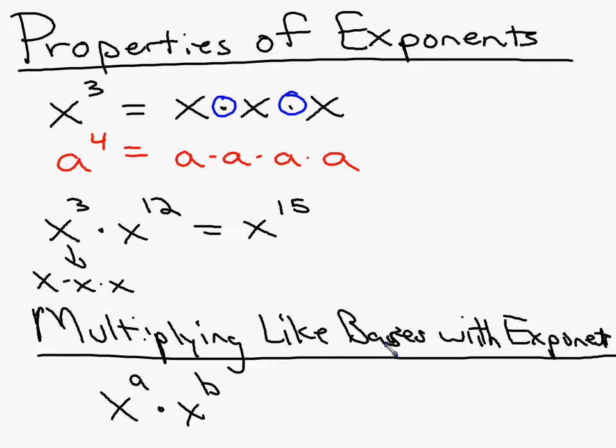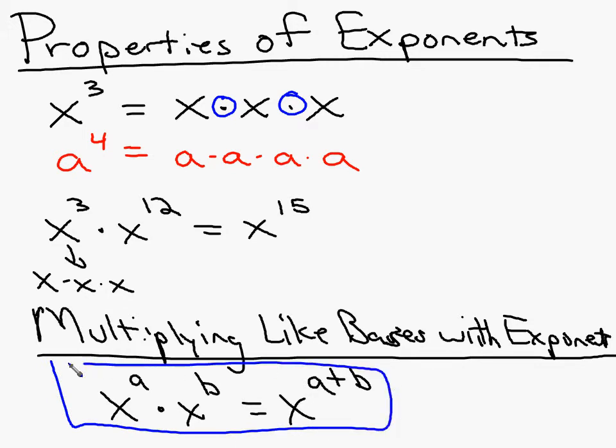If I have x to the a times x to the b, this property says that equals x to the a plus b. I add the exponents, and that is your first property of exponents. Now notice, I did write this word like bases. This only works if the bases are the same letter or the same number. So that's only true if they are the same base.